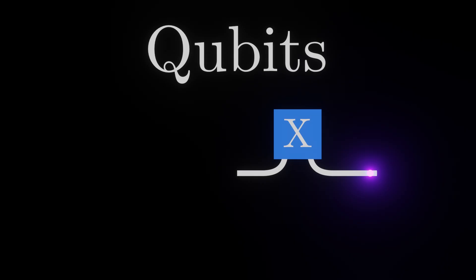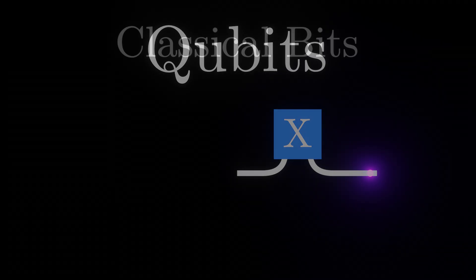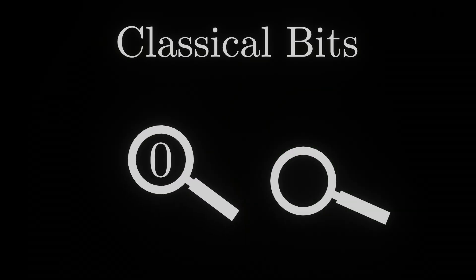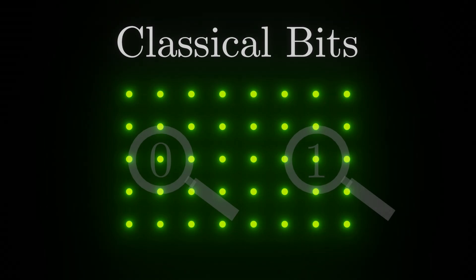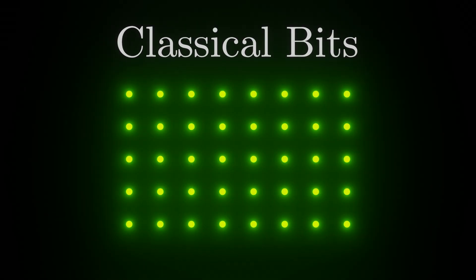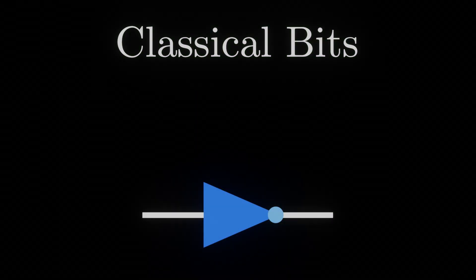To start, let's review the workings of the qubit's simpler cousin, the classical bit. Bits in classical computing are objects that can either be in a state called 0 or a state called 1. All information in classical computing is stored using bits, and they can be manipulated by passing them through logic gates.